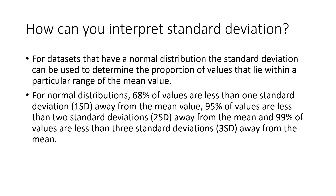How can you interpret standard deviation? For data sets with a normal distribution, standard deviation determines the proportion of values within a particular range of the mean. For normal distribution: 68% of values are less than 1 SD from the mean, 95% are less than 2 SDs away, and 99% are less than 3 SDs away from the mean.